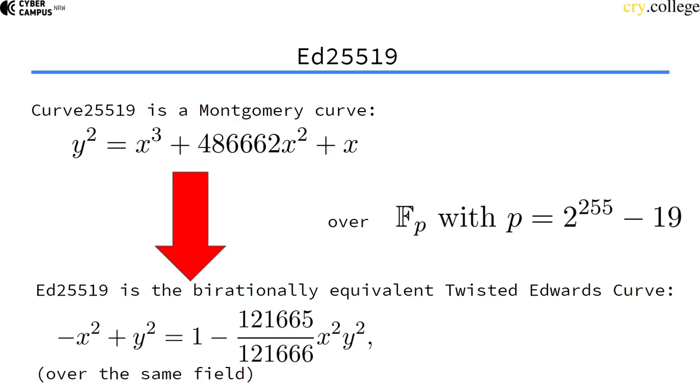So the birationally equivalent twisted Edwards curve is of this form, as this equation. You can see in the literature how to transfer the equations into one another, but for our means that's not important here.